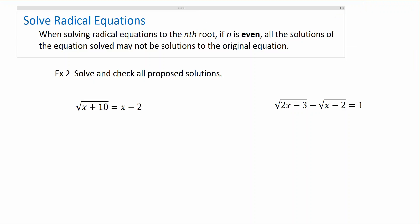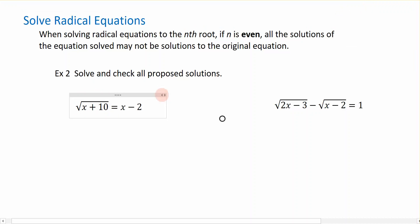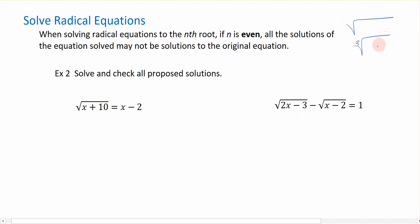In this video, we're going to focus on solving radical equations. Radical equations are equations that have some sort of radical symbol in them. When there's no index number on the outside, it's implied to be the square root symbol. But we have all sorts of other roots we can take, such as the cubed root, the fourth root, and so on. This is about solving any type of equation with this symbol in it.